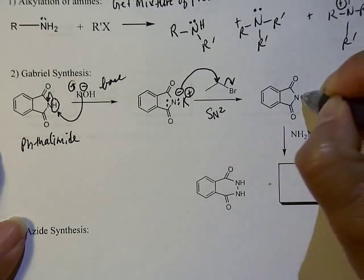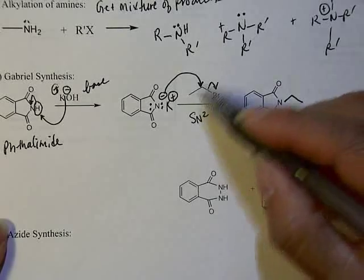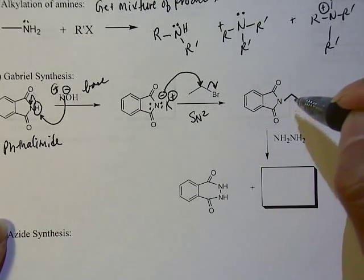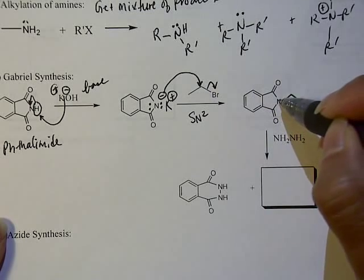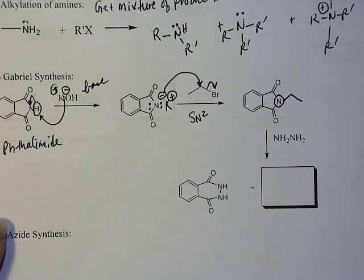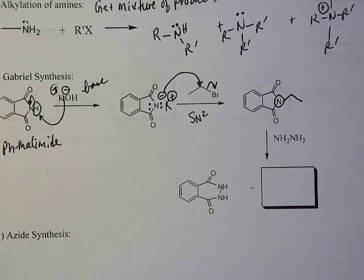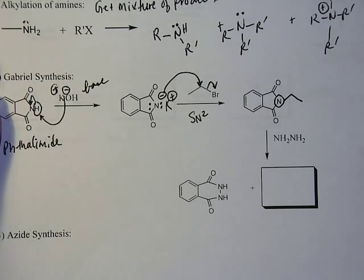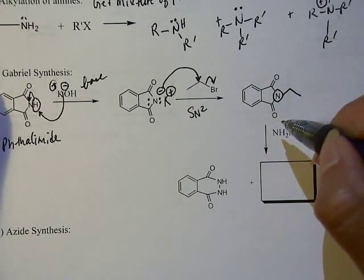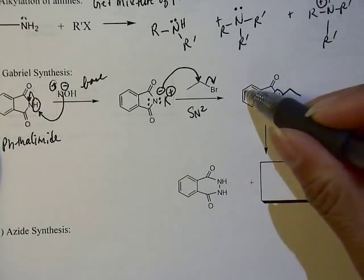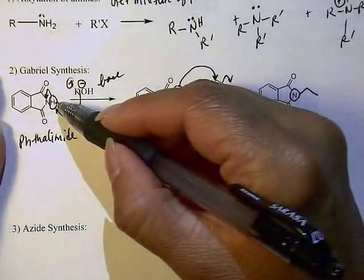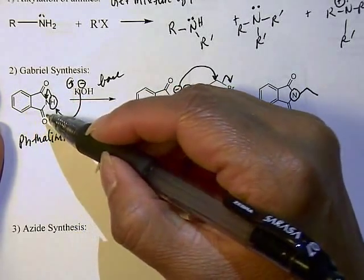You're putting on whatever R group that you're alkylating with. Now the next step is basically—this nitrogen is your nitrogen for the amine. The next step is sort of like a deprotection step in which you are going to release the amine group by reacting with hydrazine, NH2NH2.